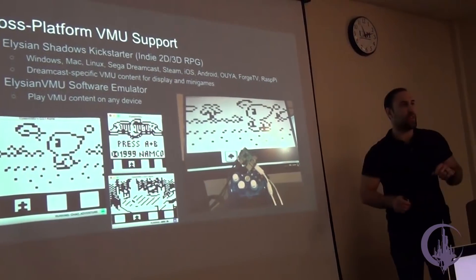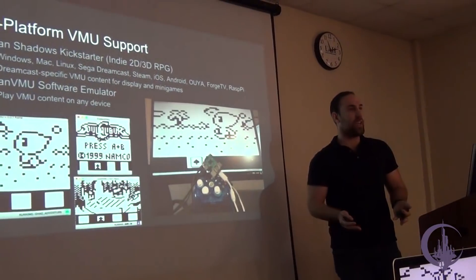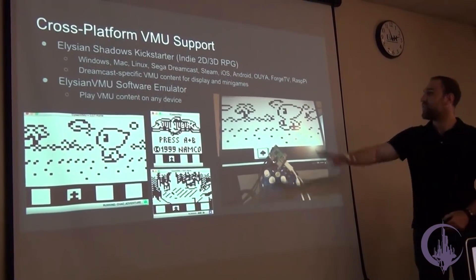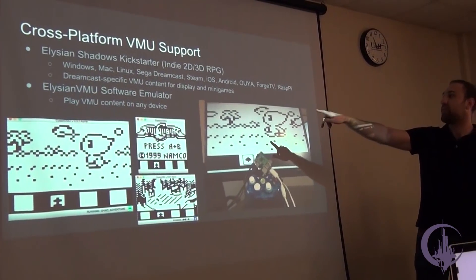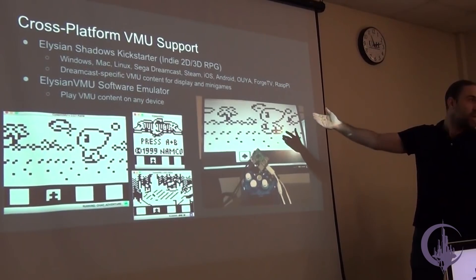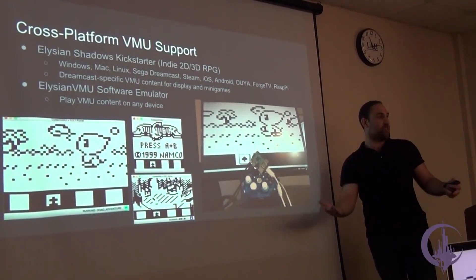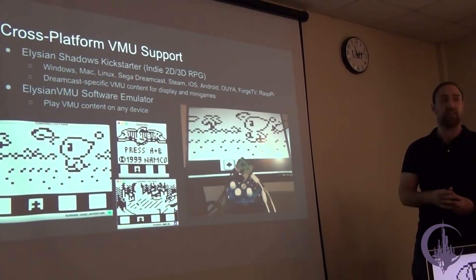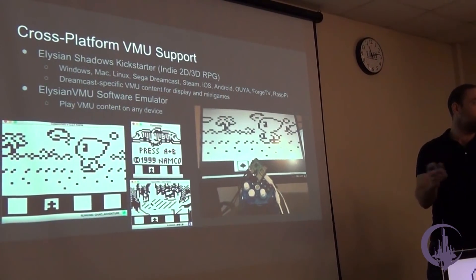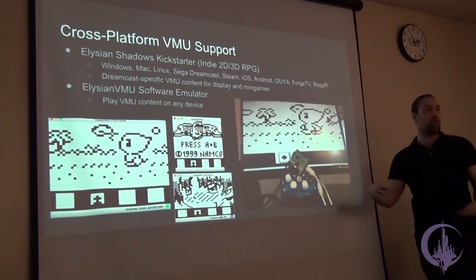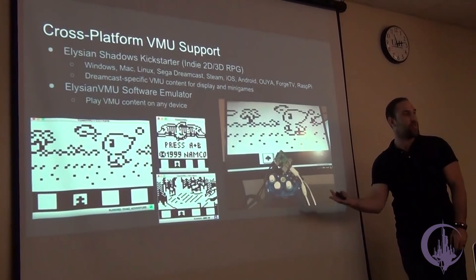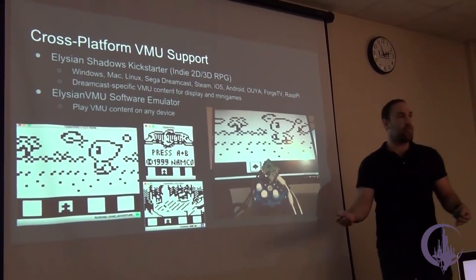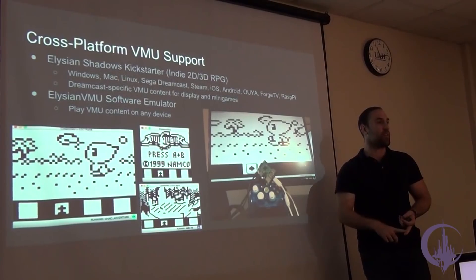So I mentioned at the beginning of class that I was working on a Kickstarter game called Elysian Shadows. Well, this game targets a bunch of different platforms, and one of the main ones that we were funded for is the Dreamcast. So in order to be a decent Dreamcast game and to appeal to the Dreamcast backers, we have to have VMU extras for the Dreamcast version. But one of the problems is we're already late, and how do we justify these Dreamcast extras for the other platforms.